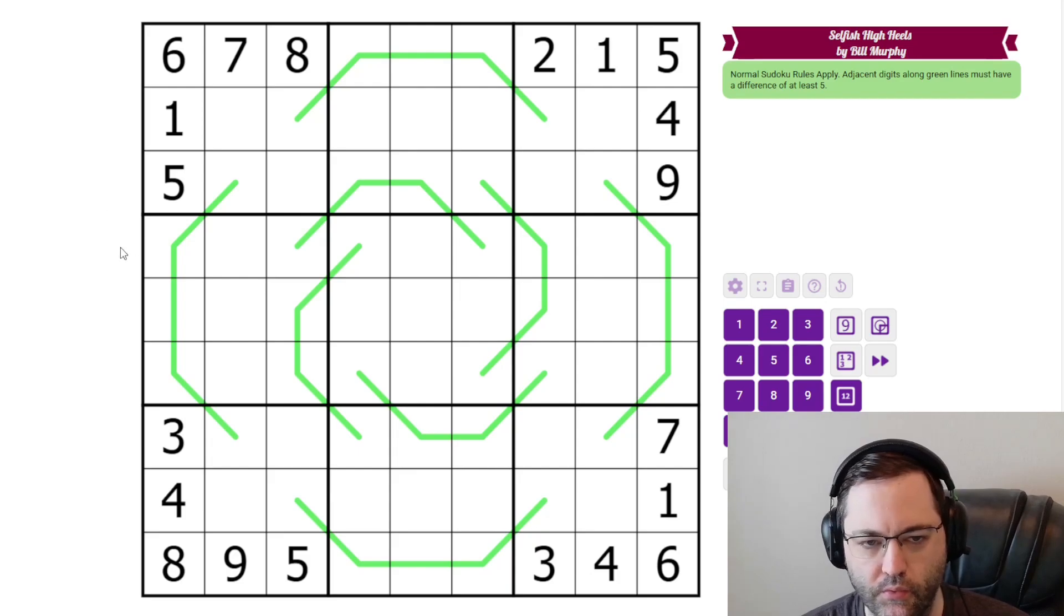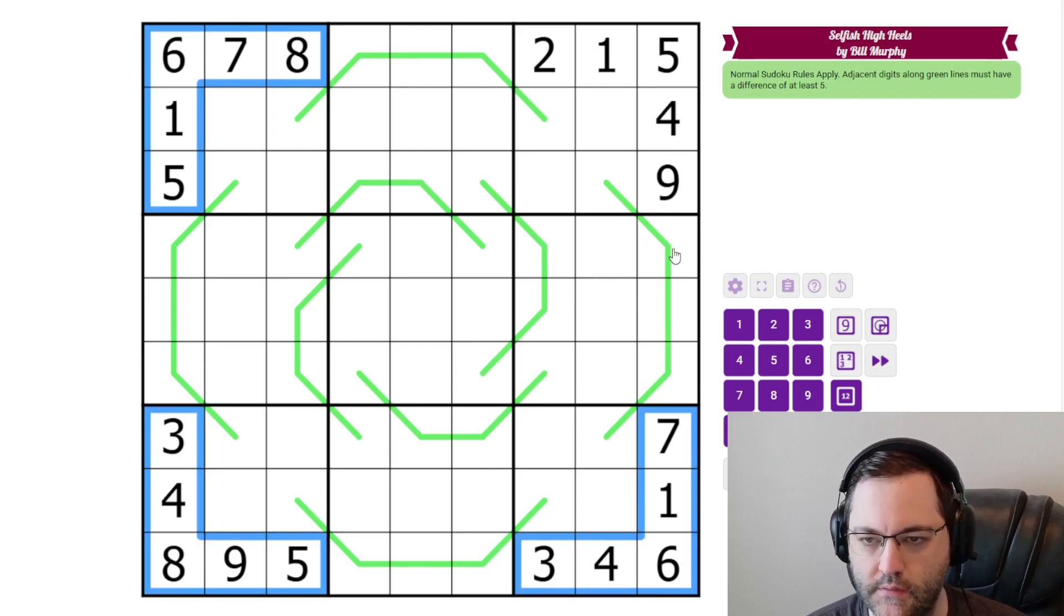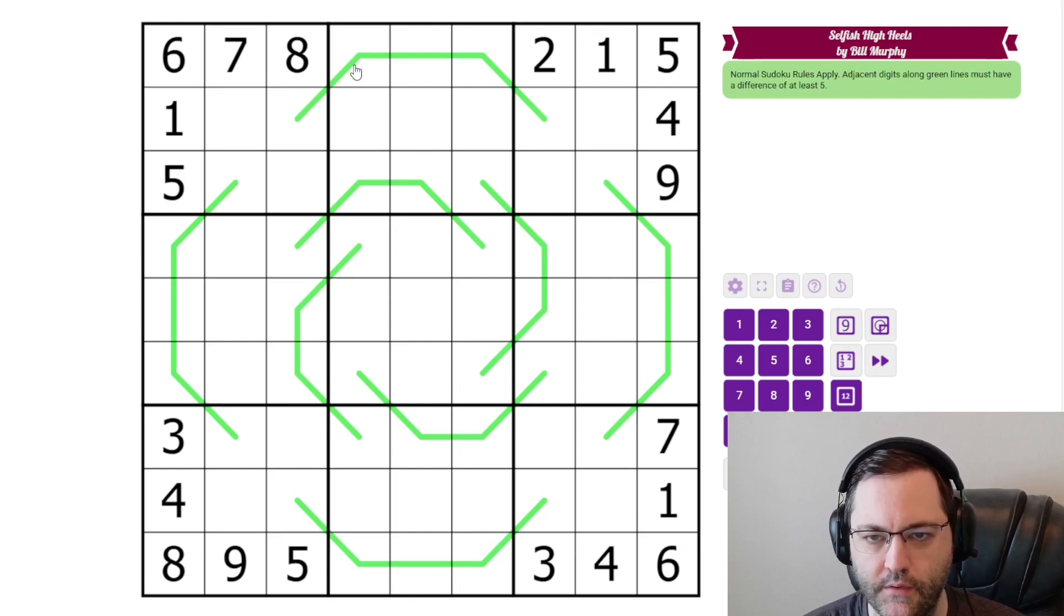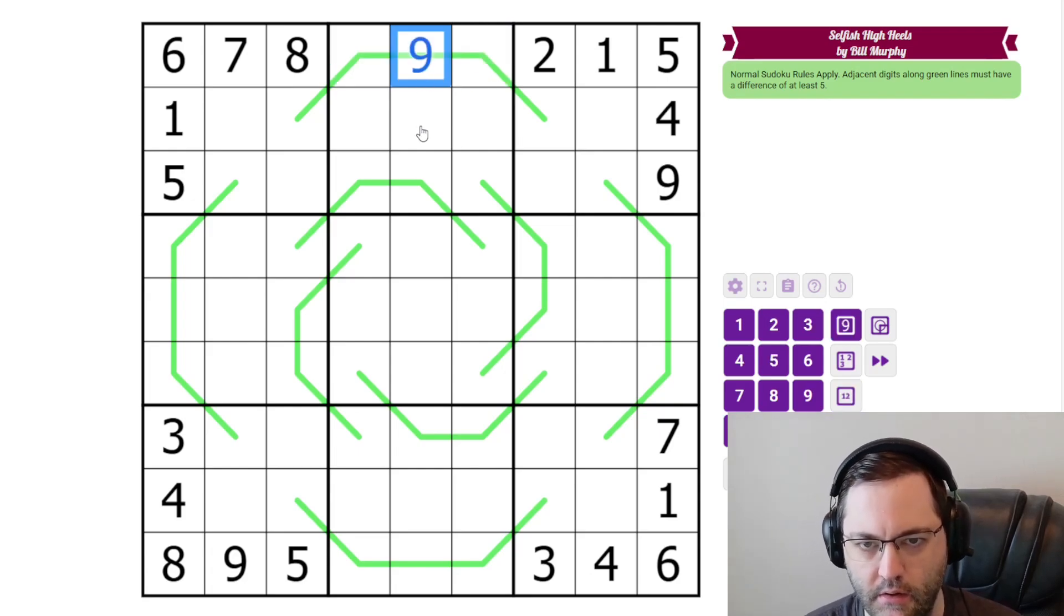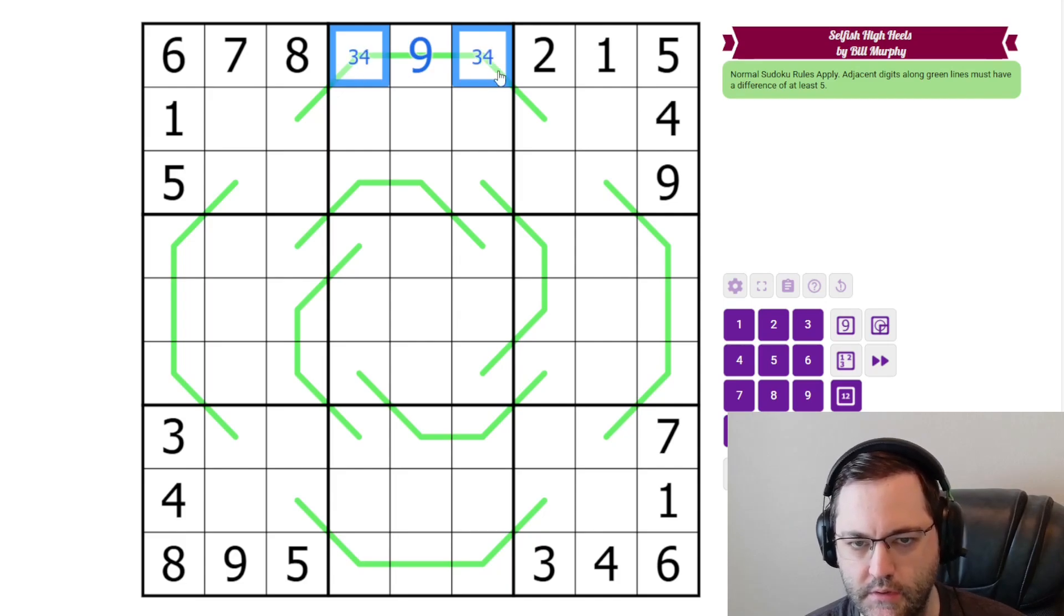So those are the rules, and Bill has this pattern of given digits. He's been doing a lot with this sort of thing, and so that's telling us we should start on the edges. The remaining digits in row one are three, four, and nine. And since we need to alternate low, high, low, or high, low, high, we're going to have to put the high digit in the middle with the two low digits next to it.